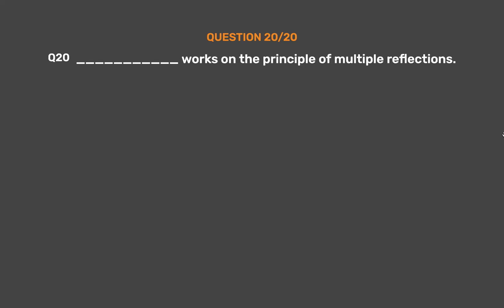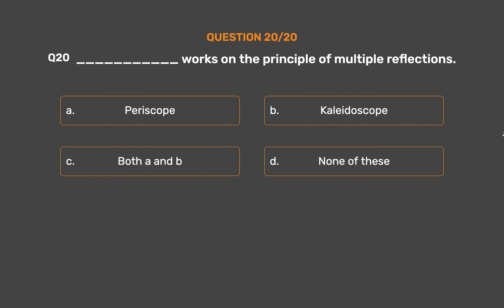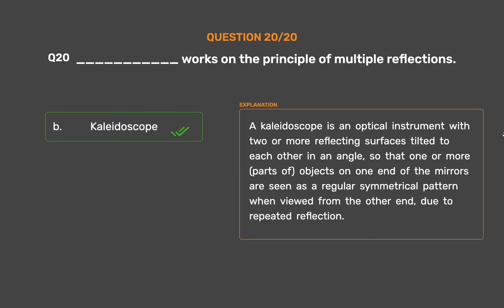Question number 20: Which device works on the principle of multiple reflections? Option A: Periscope. Option B: Kaleidoscope. Option C: Both A and B. Option D: None of these. The correct answer is Option B, Kaleidoscope. A kaleidoscope is an optical instrument with two or more reflecting surfaces tilted to each other at an angle, so that objects on one end of the mirrors are seen as a regular symmetrical pattern when viewed from the other end, due to repeated reflection.